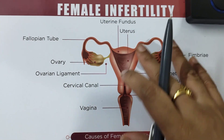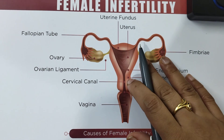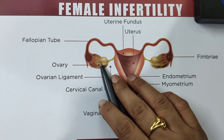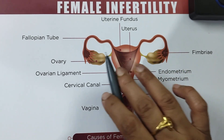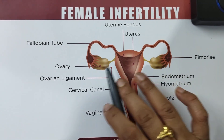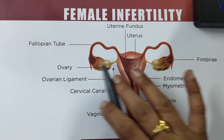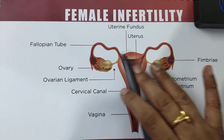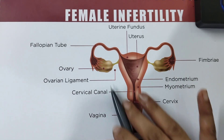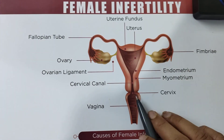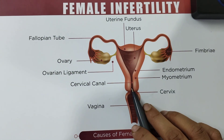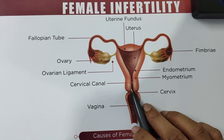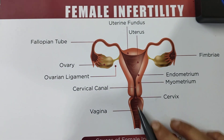Discussing female infertility here — a female has two ovaries, right and left, there are two fallopian tubes, again right and left, and there is a single uterus. The mouth of the uterus is known as the cervix, and this is the vagina.